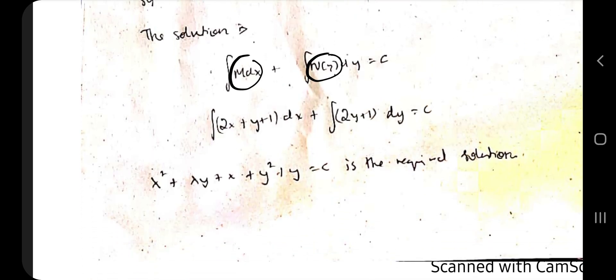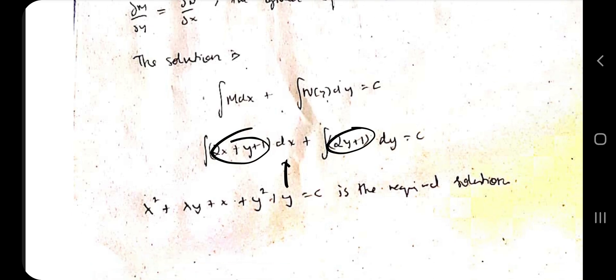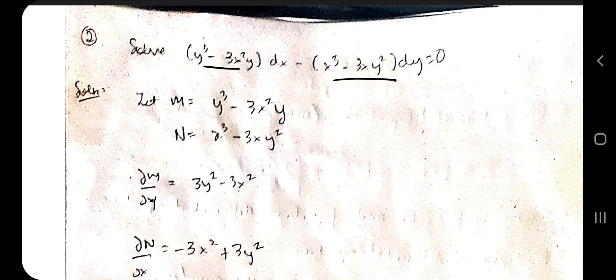Once you have confirmed it's an exact differential equation, the solution is: integral of M dx plus integral of N(y) dy, where N(y) means include only the terms which have y only — no x terms. For example, 2y or any constant multiplied by y. Integrate and equate the result to c; that is the final answer.